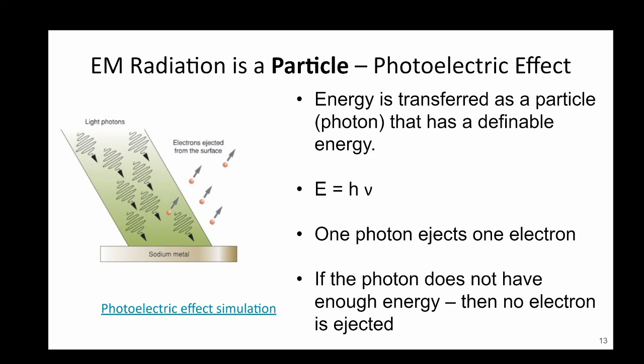Particles of energy, photons, hit the metal with energy of E equals H nu. The energy of the photon is directly proportional to the frequency of the light, since it is also a wave, times Planck's constant. You do not need to memorize the value of H, Planck's constant.